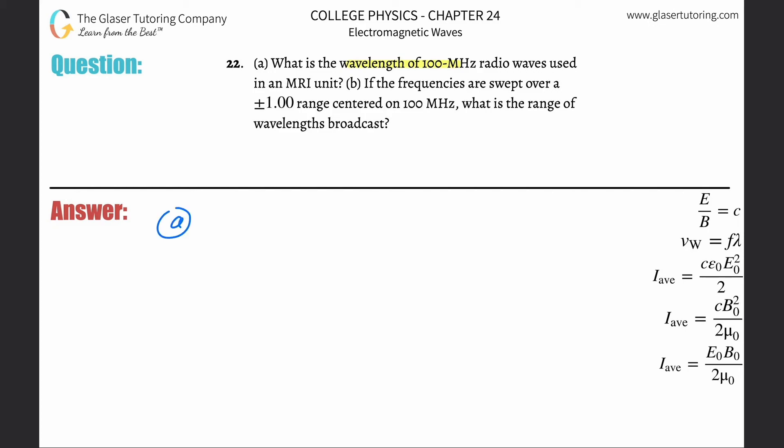So letter A, basically all we need to do is use the formula that the velocity of the wave is going to equal the frequency multiplied by the wavelength. If we're asked to find the wavelength, divide both sides by the frequency, we come up with this equation.